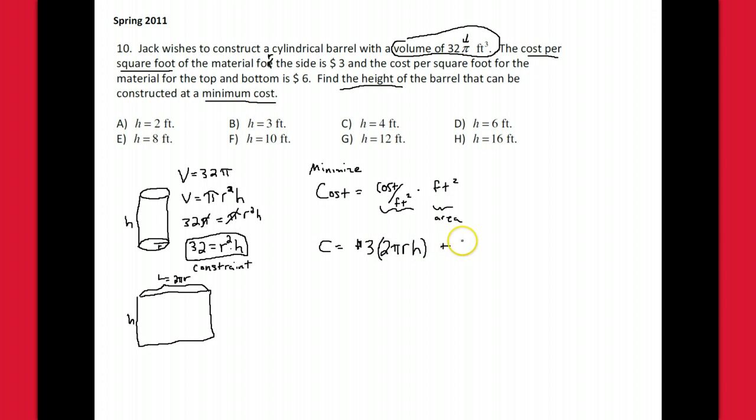But also we have the top and bottom, which are both circles, and it costs more—costs six dollars. So the area is πr². They're circles, the top and bottom circles, radius r, but there's two of them, so we just double it. There's only one lateral side.